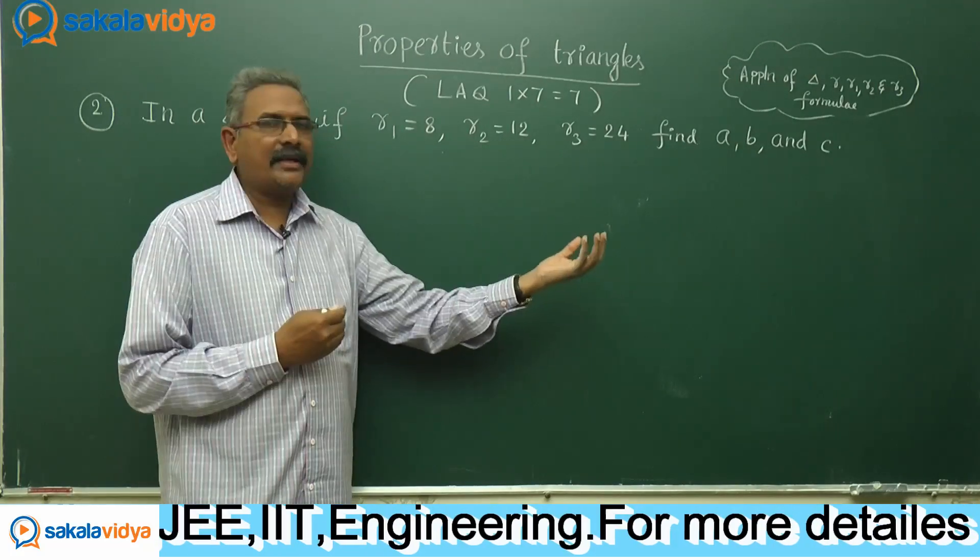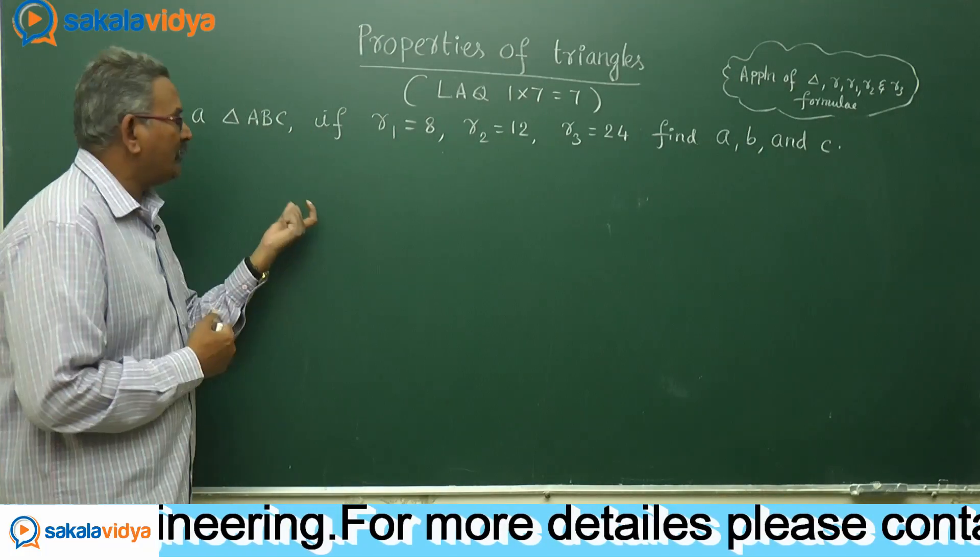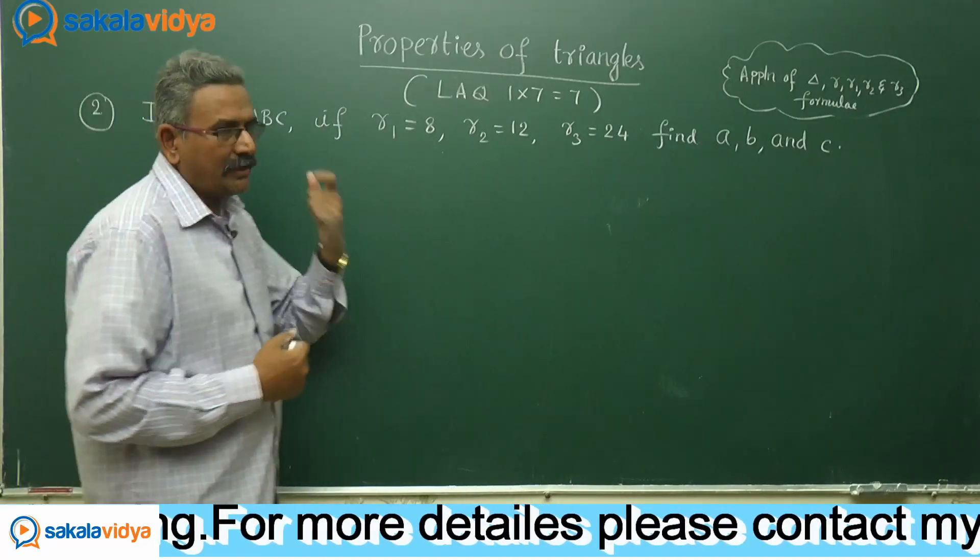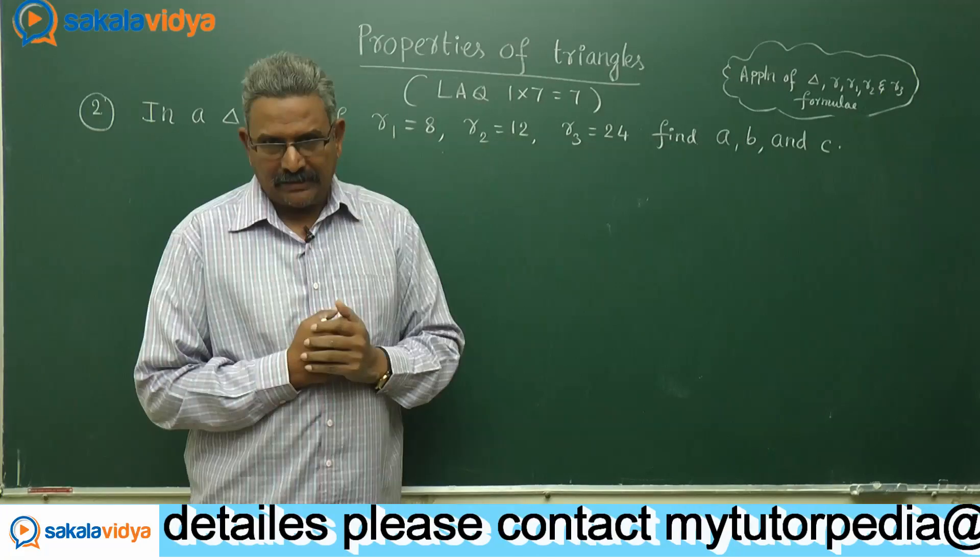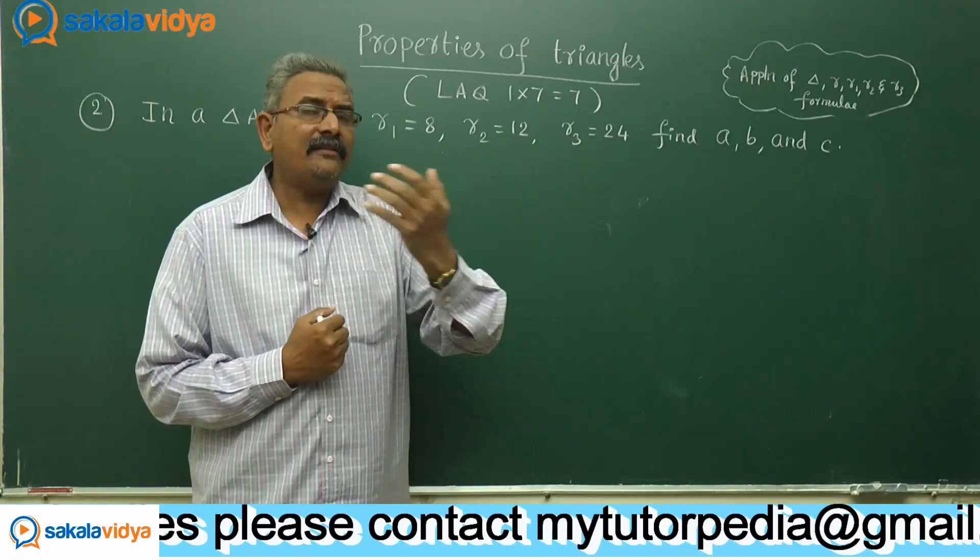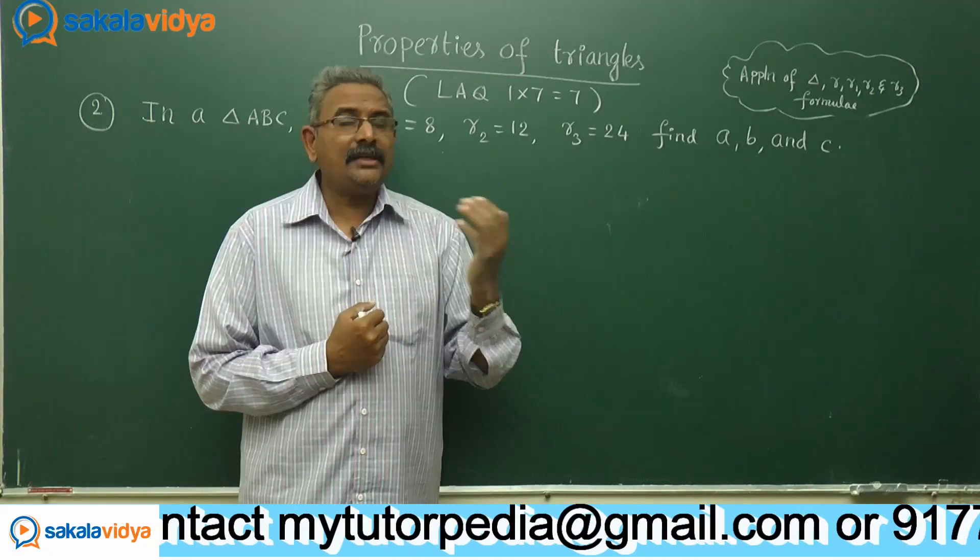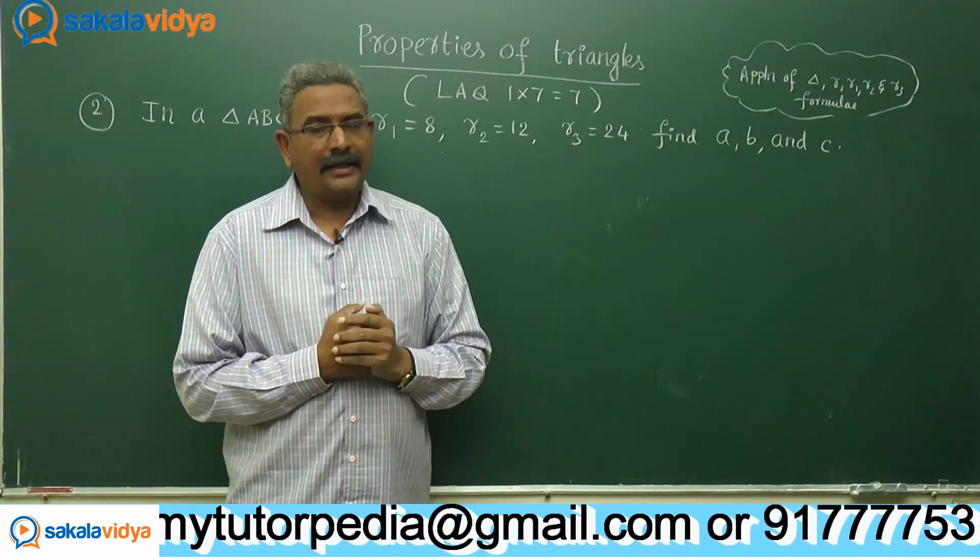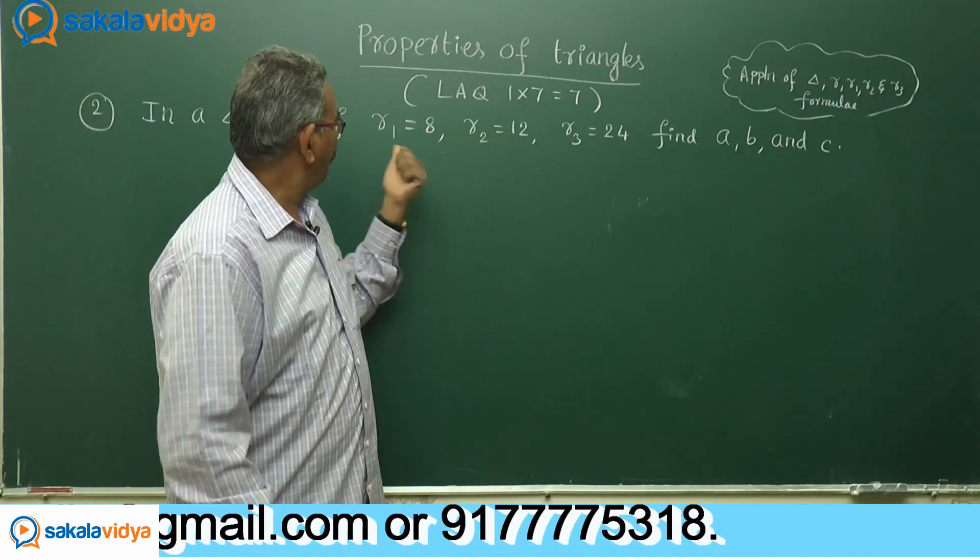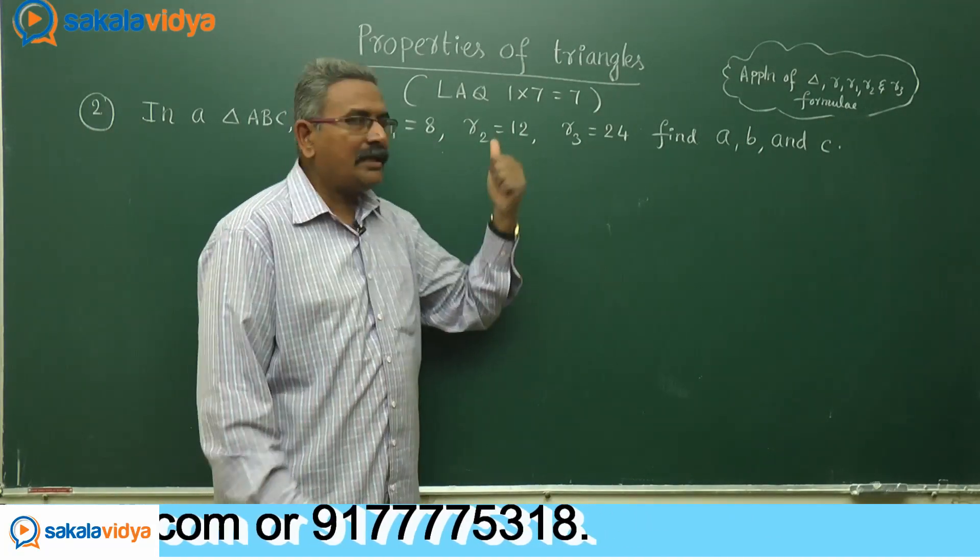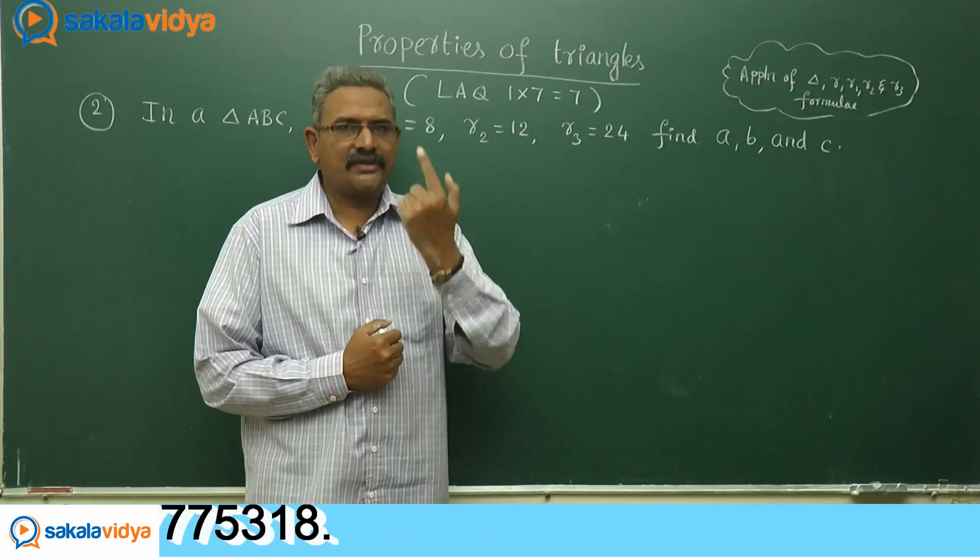The length of the sides of the triangle we need to find out. As we know R1, R2, and R3, first one question will arise: How could you evaluate delta value? Unless we know the small r and s, the delta can be evaluated. That means if R1, R2, R3 are given, can we find out r value? That is the first step.